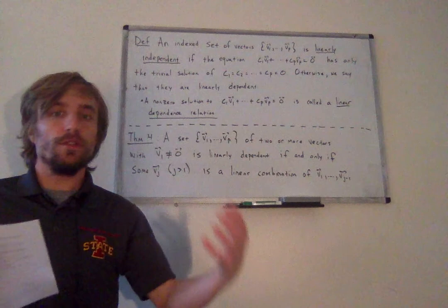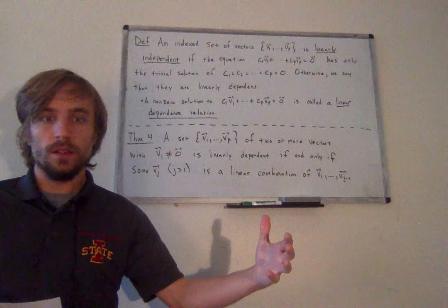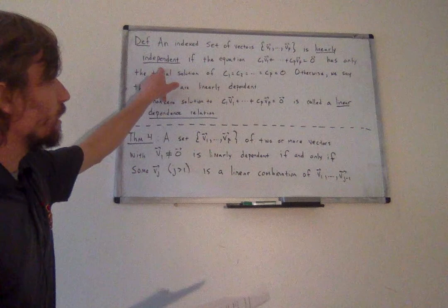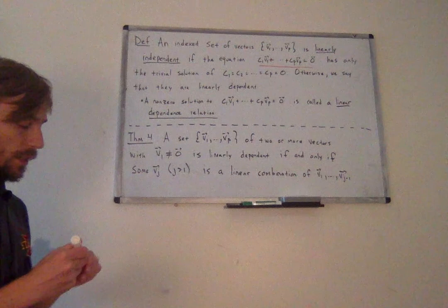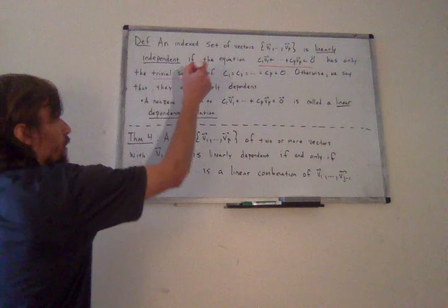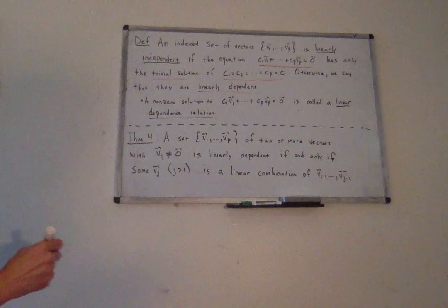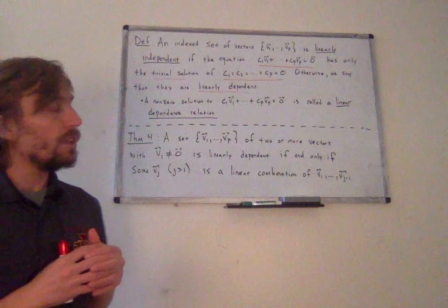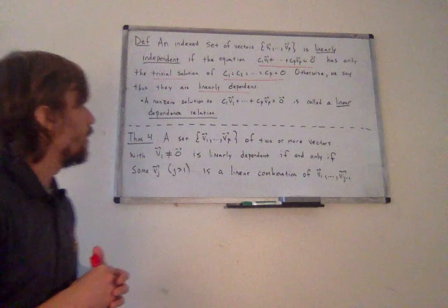We say that a set of vectors — and remember, we're now allowing these vectors to be in any sort of vector space — is linearly independent if the vector equation c1·v1 + ... + cp·vp = 0 has only the trivial solution c1 = ... = cp = 0. The main reason we redefine this is to verify that all the ideas holding in Rn also hold in other vector spaces.